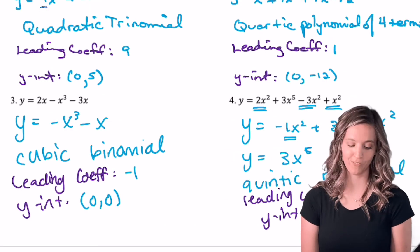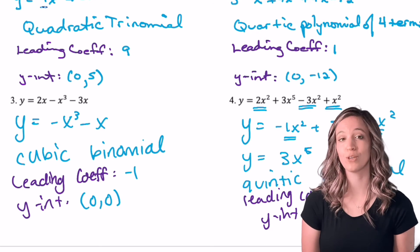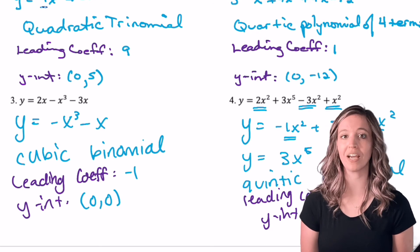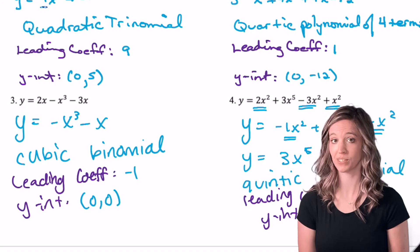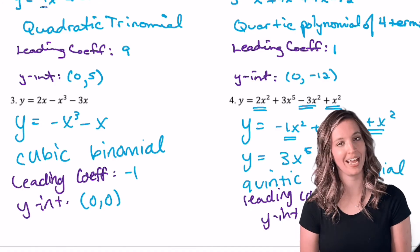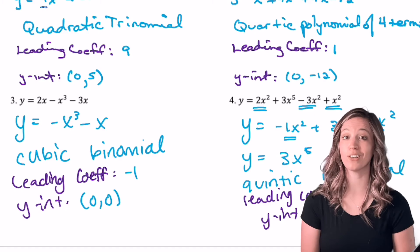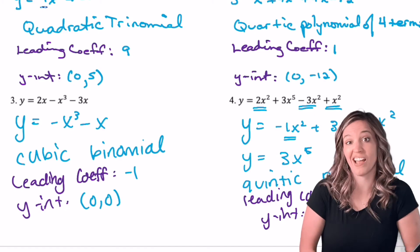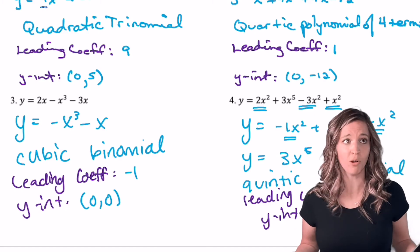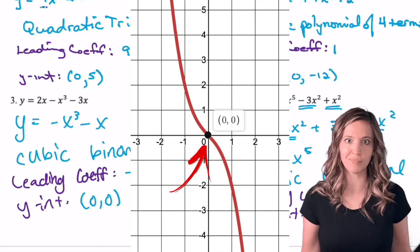Let's check number three and four. For number three, I got y equals negative x cubed minus x. That's a cubic binomial because there's two terms. Leading coefficient is negative one because that's what's in front of my x cubed. My y-intercept is (0, 0) because when I plug in zero for x, I get zero back. Hey, that's an x-intercept as well.